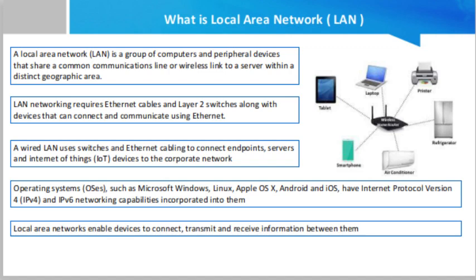There are two primary LAN types: wired LANs and wireless LANs. A wired LAN uses switches and Ethernet cabling to connect endpoints, servers, and Internet of Things (IoT) devices to the corporate network. For small businesses with only a handful of devices, a wired LAN can consist of a single unmanaged switch with enough Ethernet ports to interconnect all devices. Larger LANs connecting thousands of devices require additional hardware, software, and configuration steps to ensure the network is performing optimally.